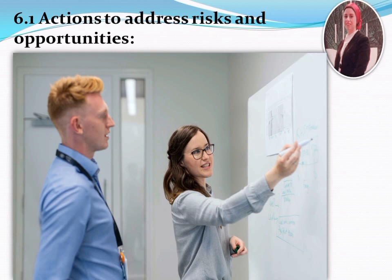To address opportunities and risks and achieve all your food safety goals, you need to make an action plan. Start by planning all actions you set to address a range of identified opportunities and risks, then proceed to devise a way to integrate them in your food safety management system, implement them, and eventually evaluate their effectiveness.